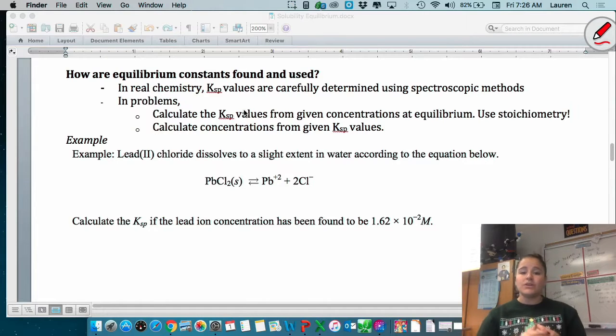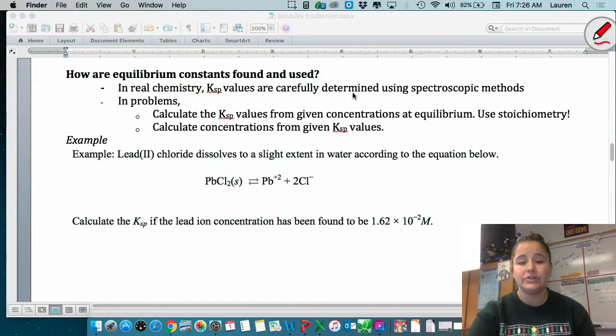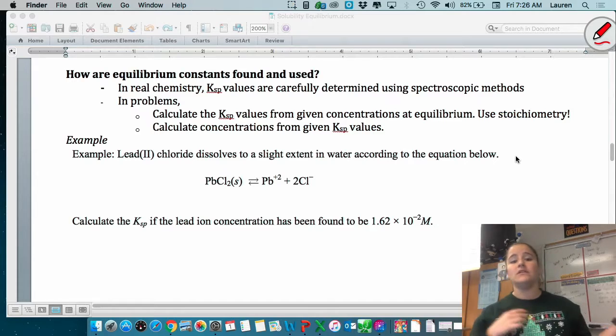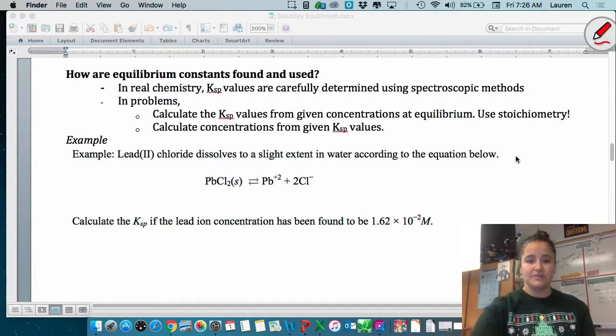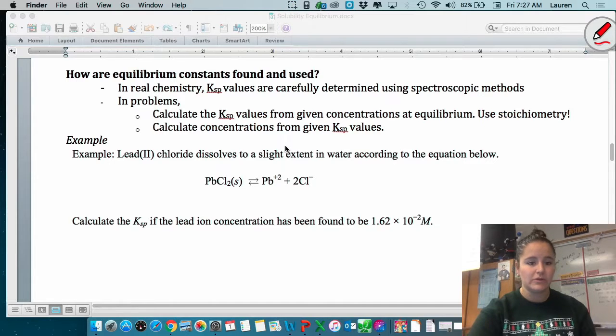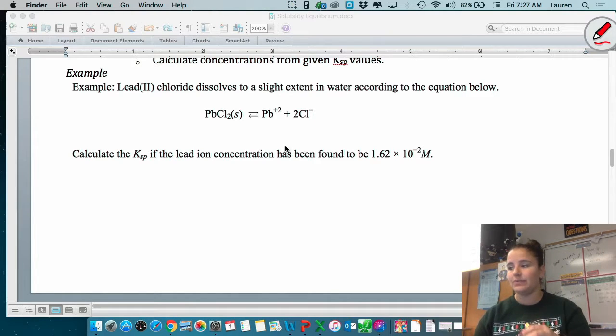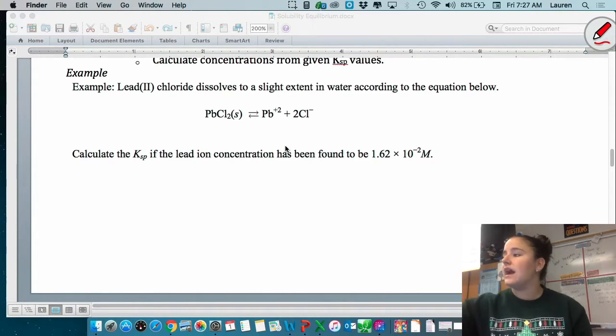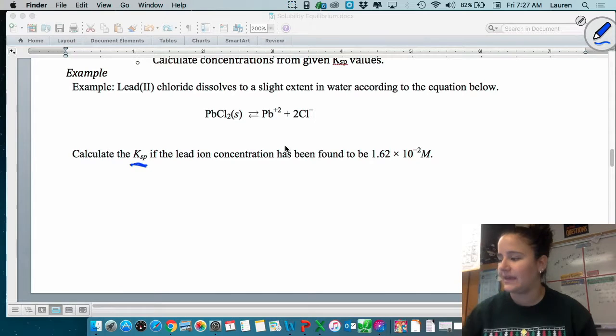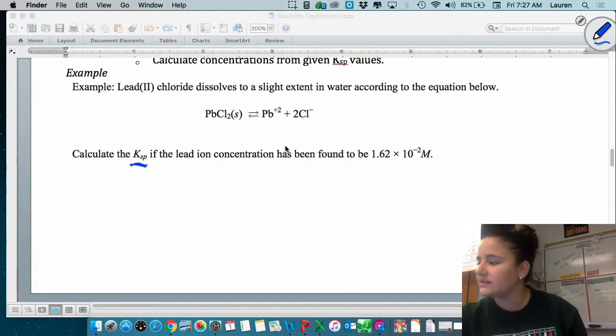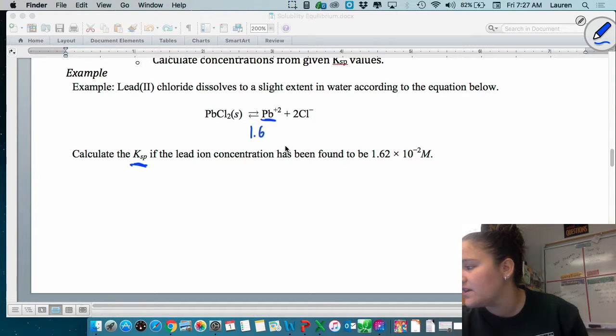So how we use them is we're going to be using them to find concentrations and we're also going to be given concentrations and use them to find the Ksp value. So those are the two most common ways. And let me show you an example. Lead 2 chloride dissolves to a slight extent in water according to the equation below. We have our lead chloride and it dissolves into lead 2+ and two Cl-. Now we're going to calculate the Ksp if the lead ion concentration was found to be 1.62 times 10 to the negative 2 molar.